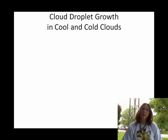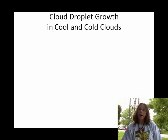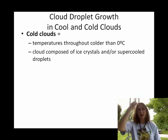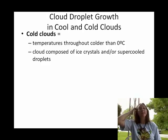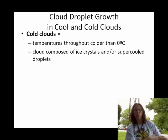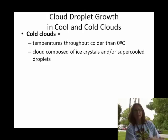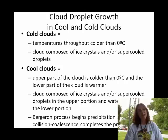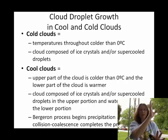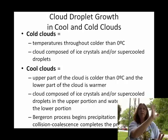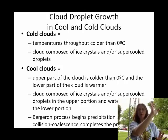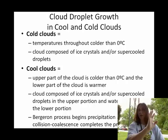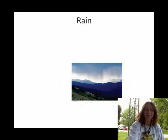So to summarize: warm clouds use the collision coalescence process; cold clouds use the Bergeron process. And then cool clouds are kind of segmented — up high it's cold enough to give you ice crystals via the Bergeron process, and underneath that you have the collision coalescence process going on.